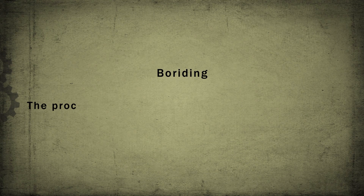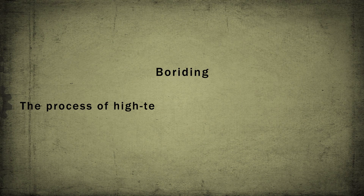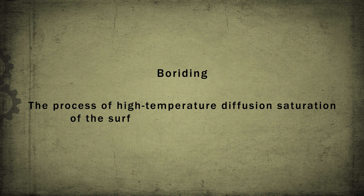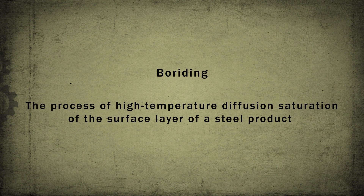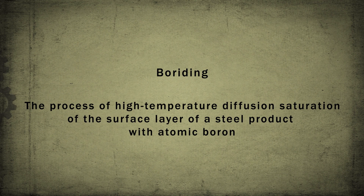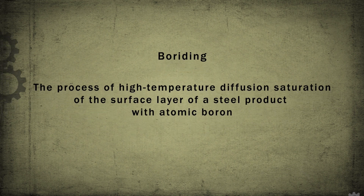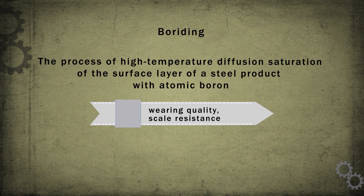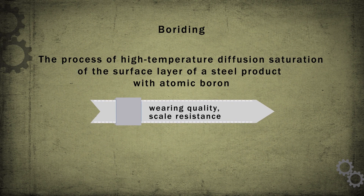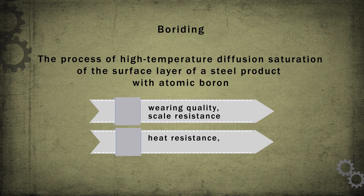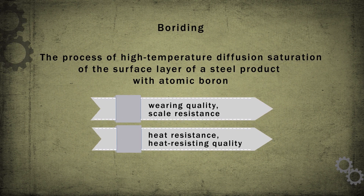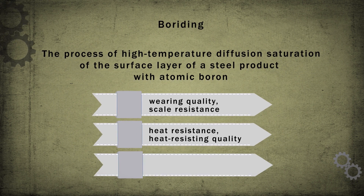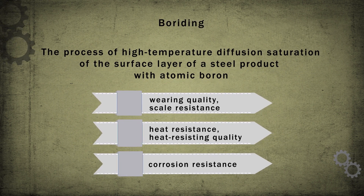Buridine is the process of high temperature diffusion saturation of the surface layer of a steel product with atomic boron. This type of thermochemical treatment increases wearing quality, scale resistance up to 800 centigrade degrees, heat resistance, heat-resistant quality, and corrosion resistance of steel.